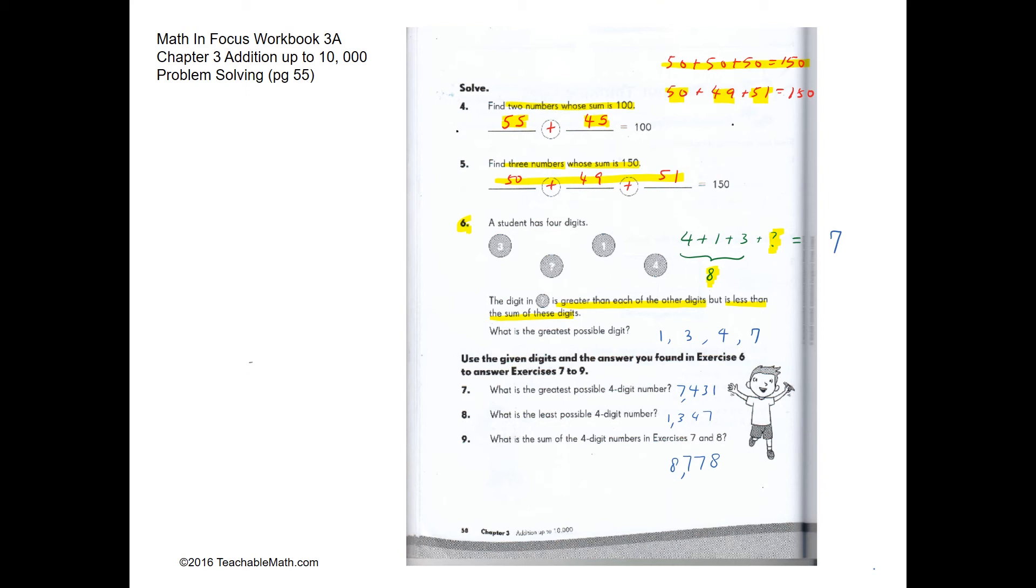So we have to find a number that is more than 3, 1, and 4, but less than the sum, which is 8. The greatest number would be 7. The answer is 7. So the answers for questions 7, 8, and 9 are pretty straightforward, and they are here.